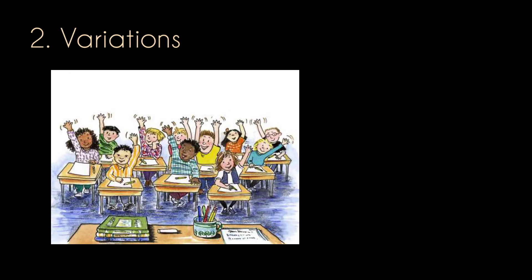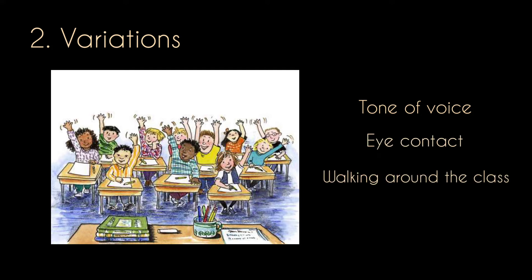The second is variation. The skill of holding variations is the skill of the teacher in teaching with some variations to attract students' attention. This variation skill is related to the teacher's creativity in teaching. Teachers can use variations in tone of voice — from loud to soft, high to low, and fast to slow, for example — or it could be by making eye contact, walking around the class, using facial expressions, and so on.